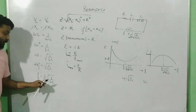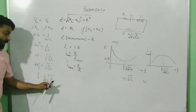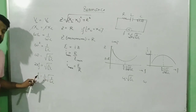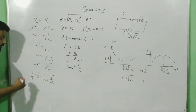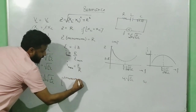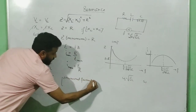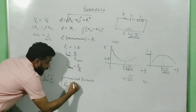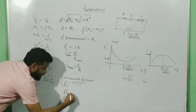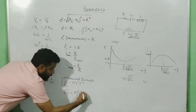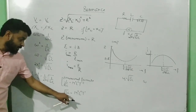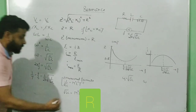Remember: if they ask for the dimensional formula of root over of 1 by LC, it is the dimensional formula of frequency, which is 1 by time period, i.e., M⁰L⁰T⁻¹. Therefore the dimensional formula of root over of LC is M⁰L⁰T¹. Please pause the video and make a note of this.